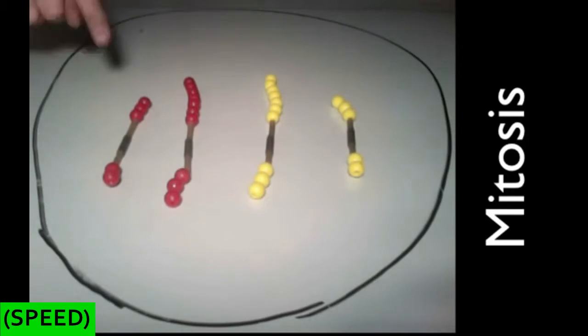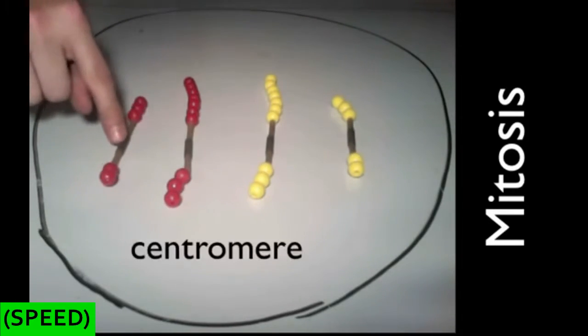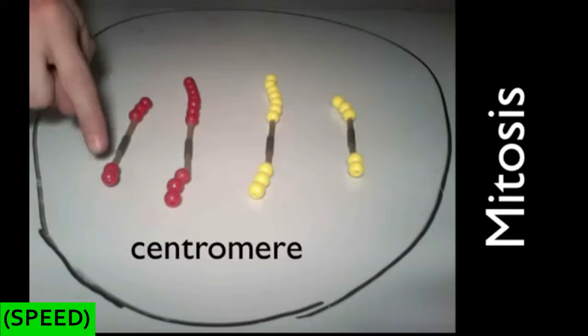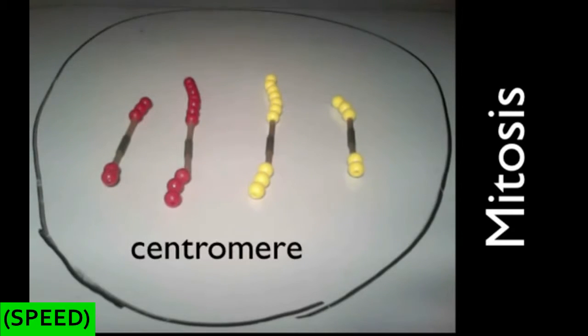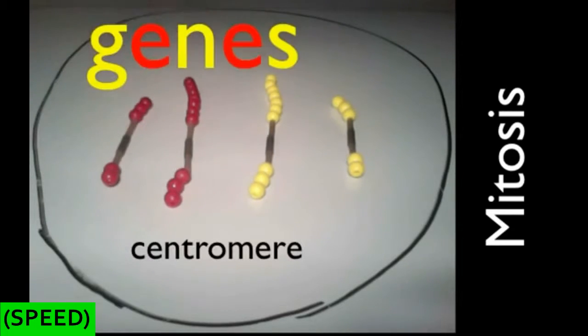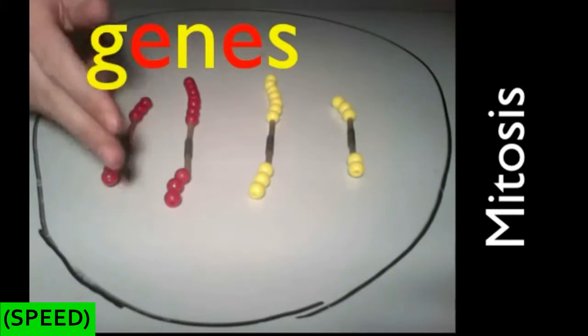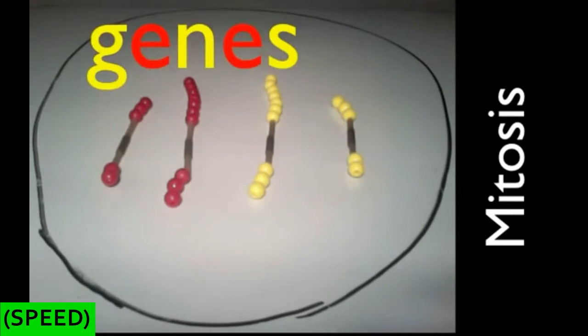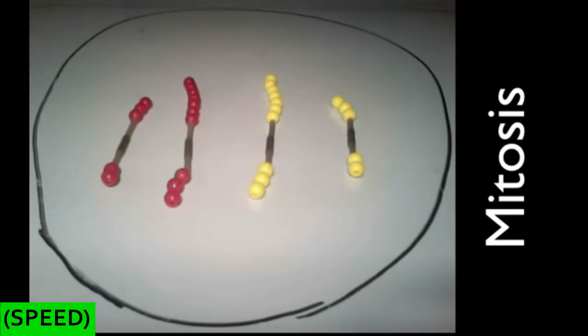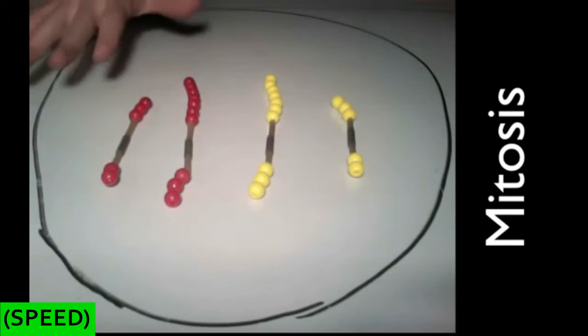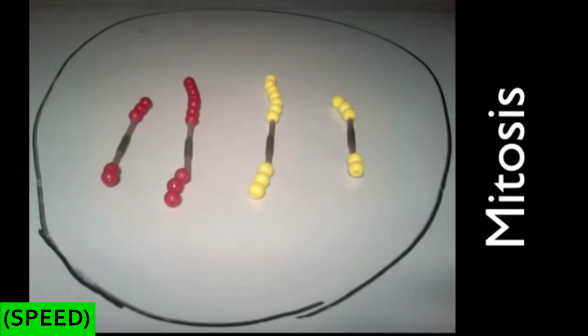A few other things you should know about a chromosome: this would be the centromere, the center where they're connected, and then each of these beads represents a gene. Here we just have a few genes, but in a human cell we're going to have thousands of genes on each of the chromosomes, so this is a very simplified model.